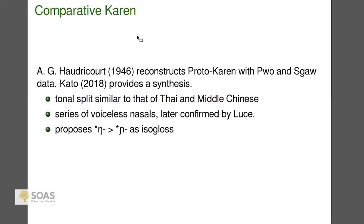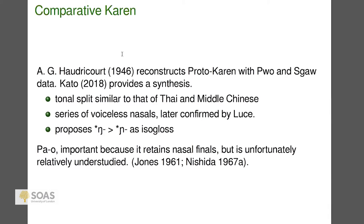This is a small example in Sino-Tibetan paralleling the famous case of Indo-European laryngeals reconstructed by de Saussure and later found in Hittite: voiceless nasals of Karen were predicted by Haudricourt and confirmed by Luce. There seems to be an isogloss characteristic of Karen: a change of Nga to Nga. One of the most interesting Karen languages is Pao, because most Karen languages have so radically simplified syllable structure that there are no finals at all — syllables like Pa and Ma only — but Pao preserves nasals, with contrasts like 'pang' versus 'pam.' Unfortunately Pao is quite understudied — another case of low-hanging fruit for a researcher.